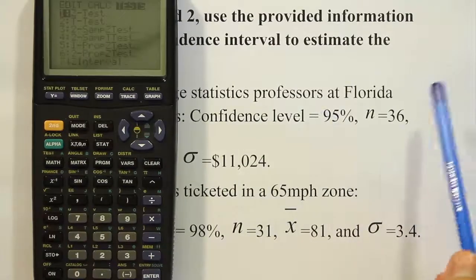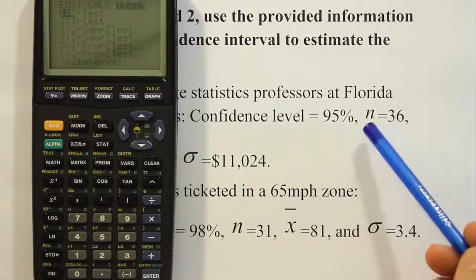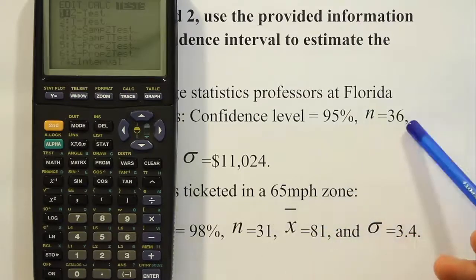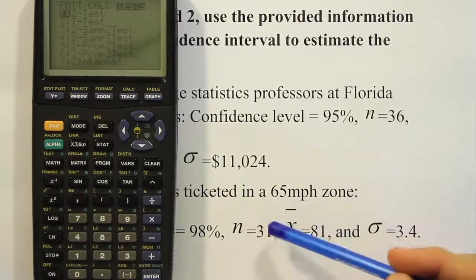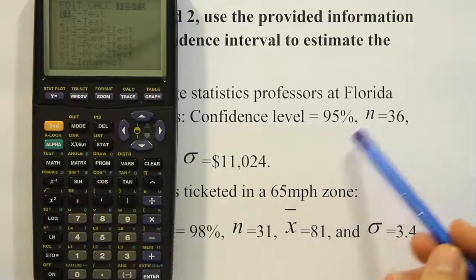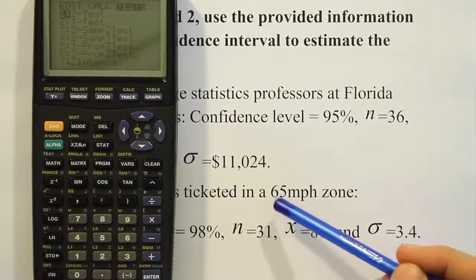So the first possible explanation is that the sample size for both problems is large. In other words, both problems have sample sizes which are over 30. You'll see 36 and 31 here. Both of these sample sizes are large enough to assume that we can use the z interval. That's if your professor is using that criteria.